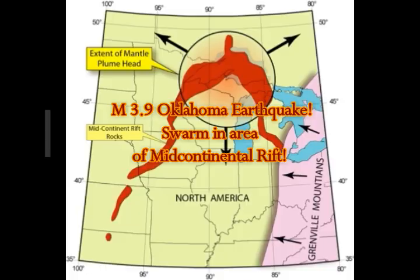A magnitude 3.9 earthquake has hit Oklahoma, and we'll take a look at that swarm. But first, I want to tell you it's in an area of the Mid-Continental Rift.